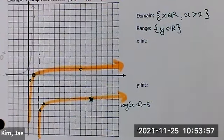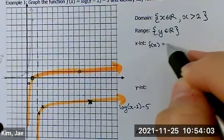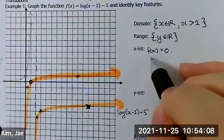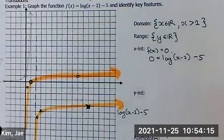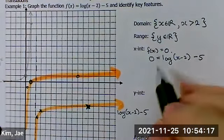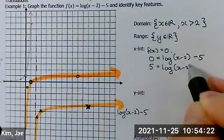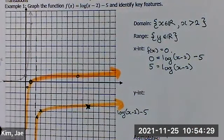With that said, if the range could be any number, do we have an x-intercept? We do. Well, that's annoying. Can we calculate it? Let's give it a shot. What is f(x) when—sorry, when is f(x) equal to zero? That means 0 is log(x - 2) - 5.